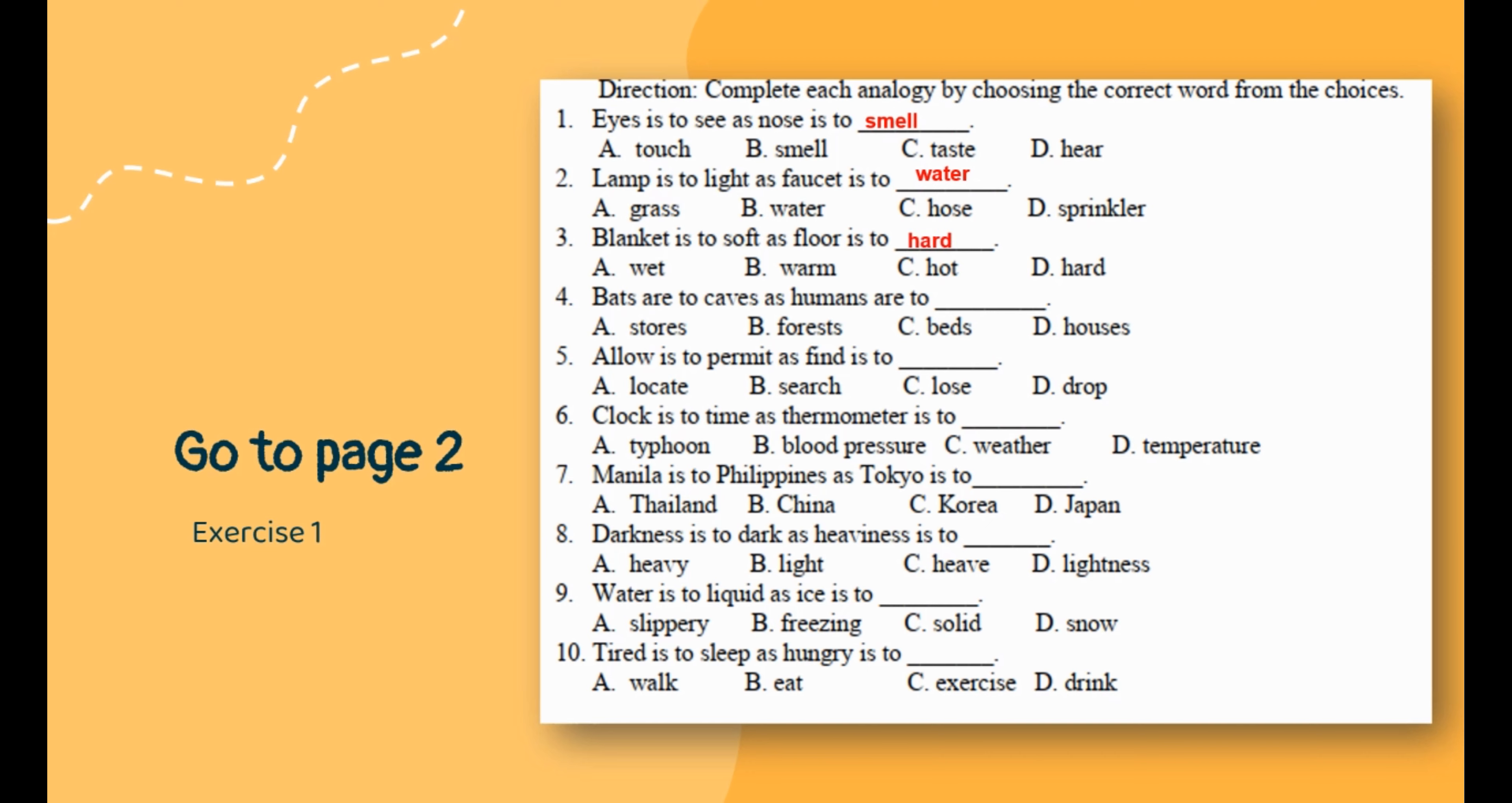Number three: bats are to caves as humans are to houses. Number four: allow is to permit as fine is to okay. Number five: clock is to time as thermometer is to temperature. Number six: Manila is to Philippines as Tokyo is to Japan. Number seven: darkness is to dark as heaviness is to heavy.